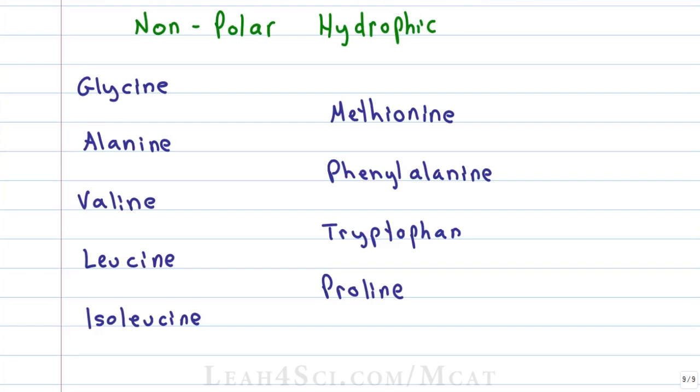Remember for the MCAT you will have to know the name, the 3 letter and 1 letter abbreviation as well as the structure for the R group. Here's how I recommend memorizing them, cut up a piece of paper and write the amino acid name on the front, on the back put the structure, the 3 and 1 letter codes and a fun fact about each one. Keep these in your pocket and look at them every time you have a free second and every night write them, draw them again and again until you have it memorized.